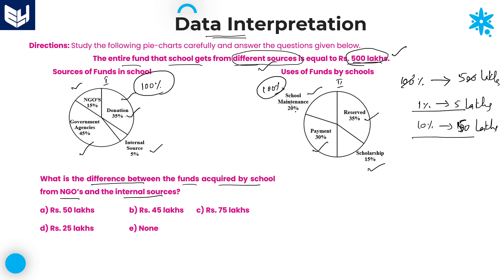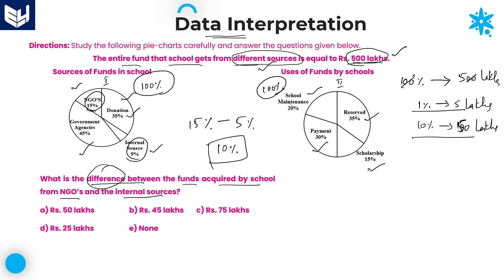In the second pie chart: 20% is used for school maintenance, 30% for payment, 15% for scholarship, and 35% for reserved candidates. Now solving the question — NGOs is 15% and internal sources is 5%. The difference is 10%. Since 10% equals 50 lakhs, the difference between NGOs and internal sources is 50 lakhs. That is option A, the required answer.